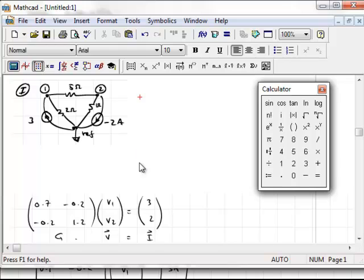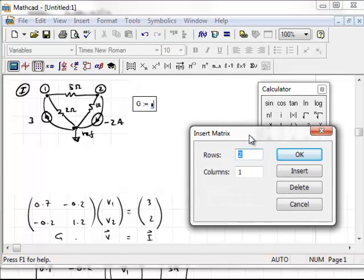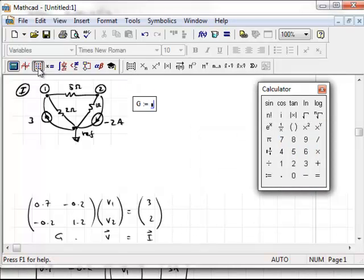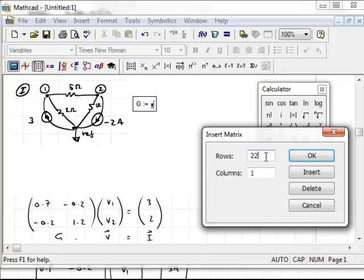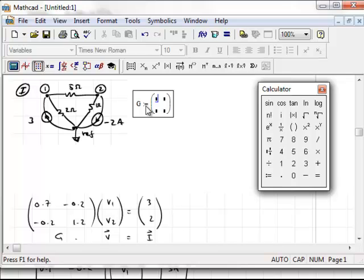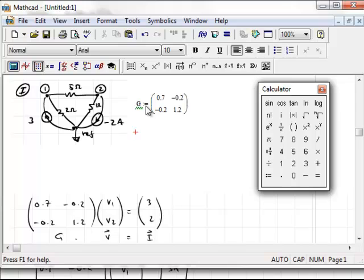So, now to the problem at hand. Let's define G. I'm going to say G colon, and now I need to enter a matrix. I'll bring up the matrix toolbar. And I want the matrix dialog box, which you can instantiate with control M. What I want is a 2 by 2, press enter, and now I can populate these. I'm going to go 0.7, minus 0.2, minus 0.2, pressing the tab key, 1.2, and then I'm done.